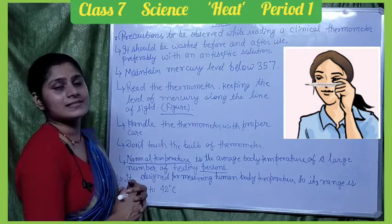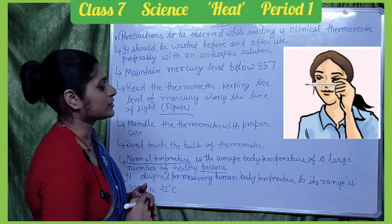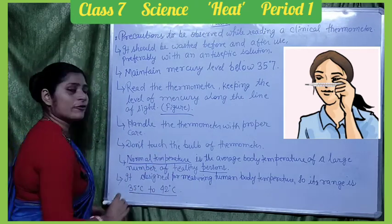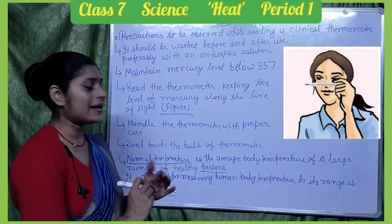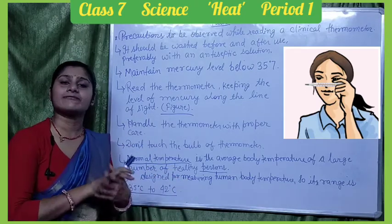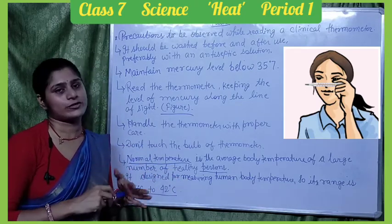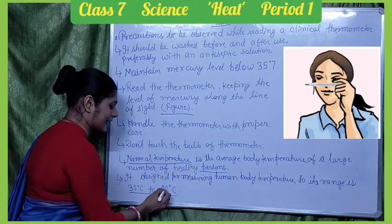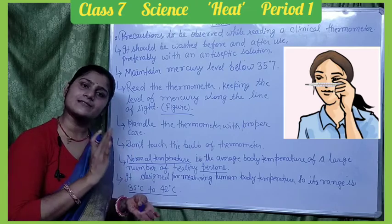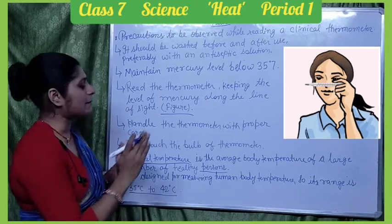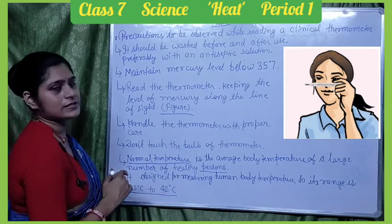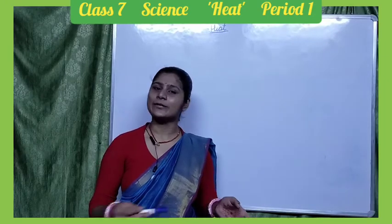The clinical thermometer is designed to measure only human body temperature, so its range is 35 degrees Celsius to 42 degrees Celsius. This range covers the lowest and highest human body temperatures — 35°C is low and 42°C is high.